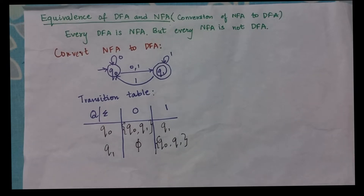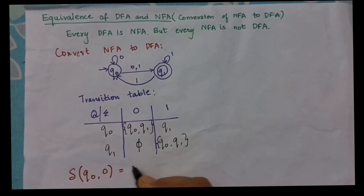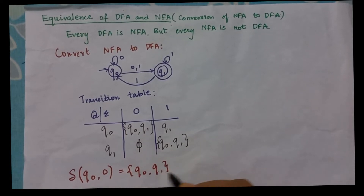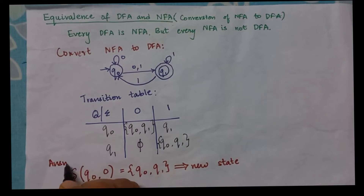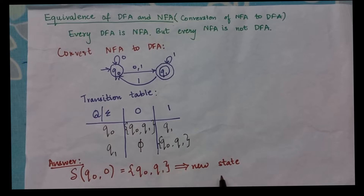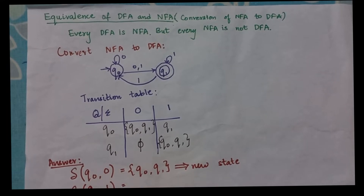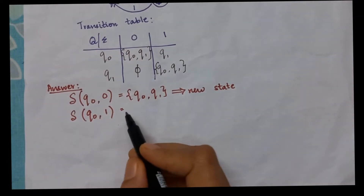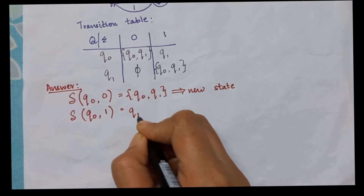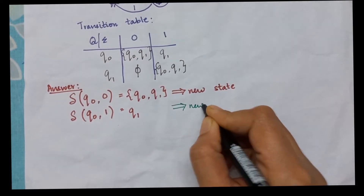So how do I convert this NFA to DFA? Initially I will consider the start state. I check Q0 with 0, which gives me Q0 comma Q1. Now for me this is a new state — till now in the computation I have not seen such a state, so I call this a new state. Then Q0 with 1 gives me Q1. Till now in my answer I have not seen this state, so I call this a new state as well.